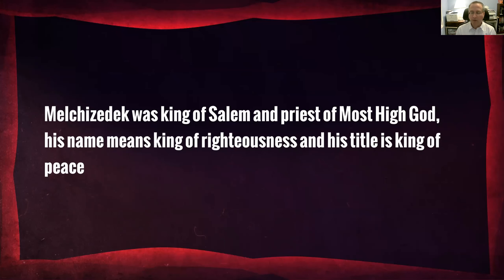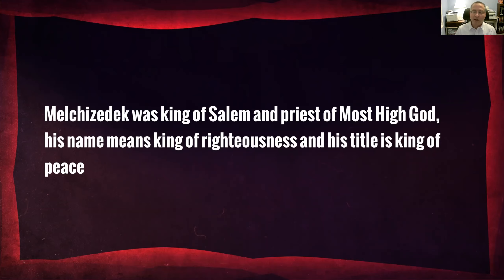In verse 2 of Hebrews chapter 7, the author starts making the point by giving us the translation of Melchizedek's name. Melchizedek comes from a combination of two Hebrew words: melek means king and sedeq means righteousness. So literally his name translated means the king of righteousness.